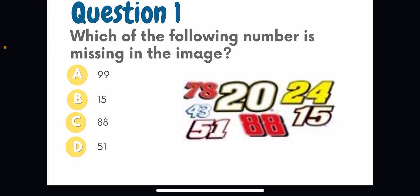The first question is: which of the following numbers is missing in the image? In the image you have 78, 43, 20, 51, 88, 24, and 15. Check the options: 99 is not present in the image, 15 is present, 88 is present, and 51 is present. So the answer is option A, 99.